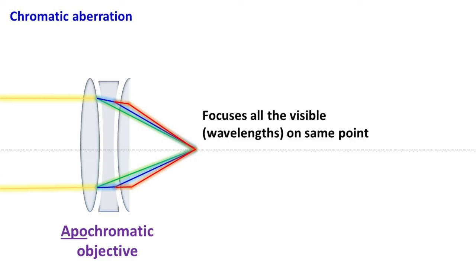Apochromatic objective is made by precise arrangement of three lenses. Hence it is often called apochromatic triplet.